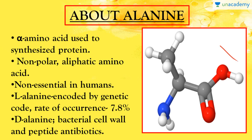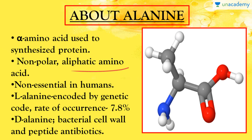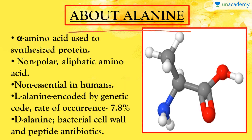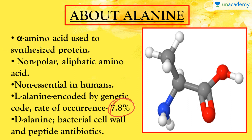This is the molecular structure of alanine. It is an alpha amino acid used to synthesize protein. It is nonpolar and aliphatic in nature, and non-essential to humans — meaning it can be synthesized inside our body, so we do not need any special dietary source. However, if there is a scarcity, there are some sources which will be discussed in the next slides. Alanine is encoded by the genetic code at a rate of 7.8%, which is a very large ratio among the 20 amino acids.